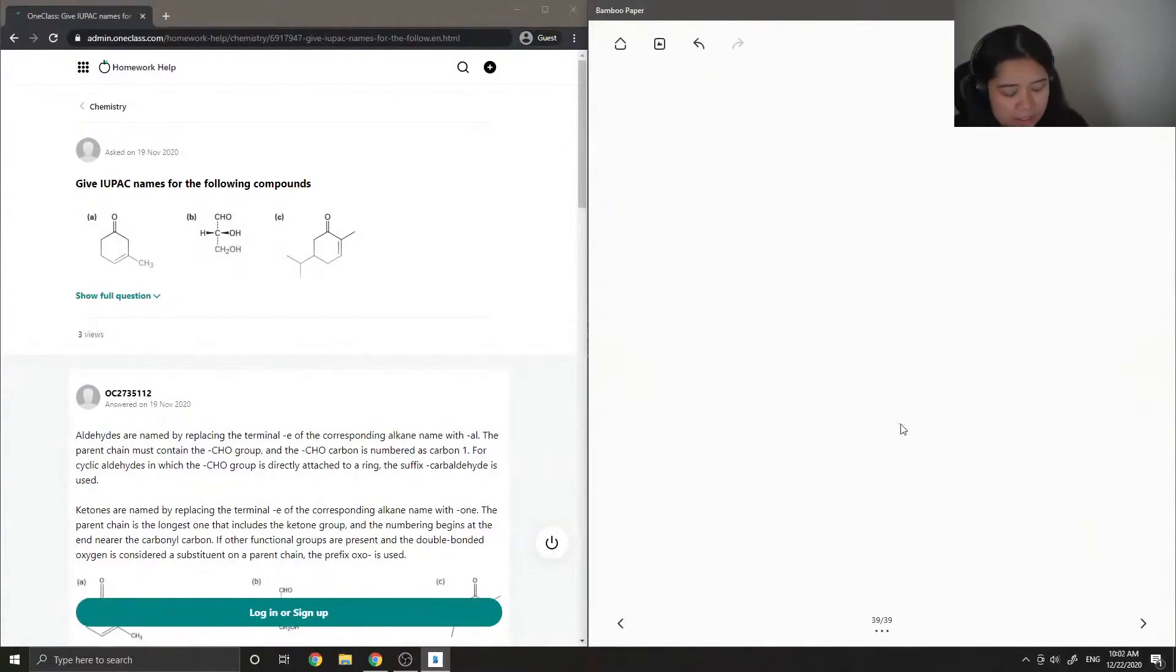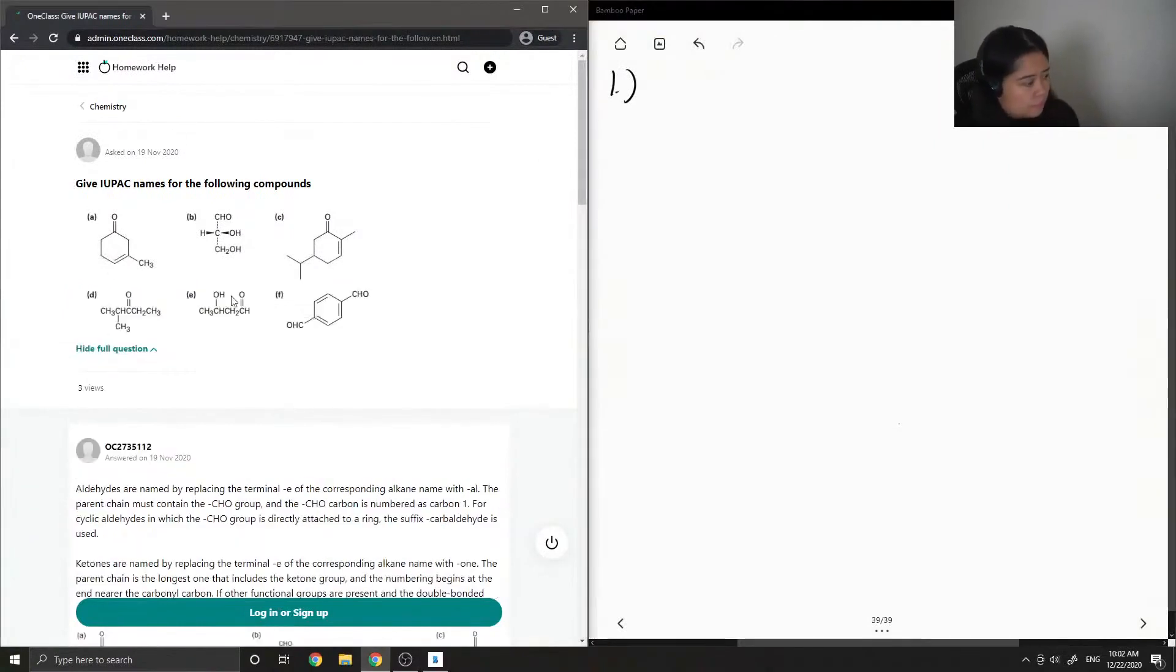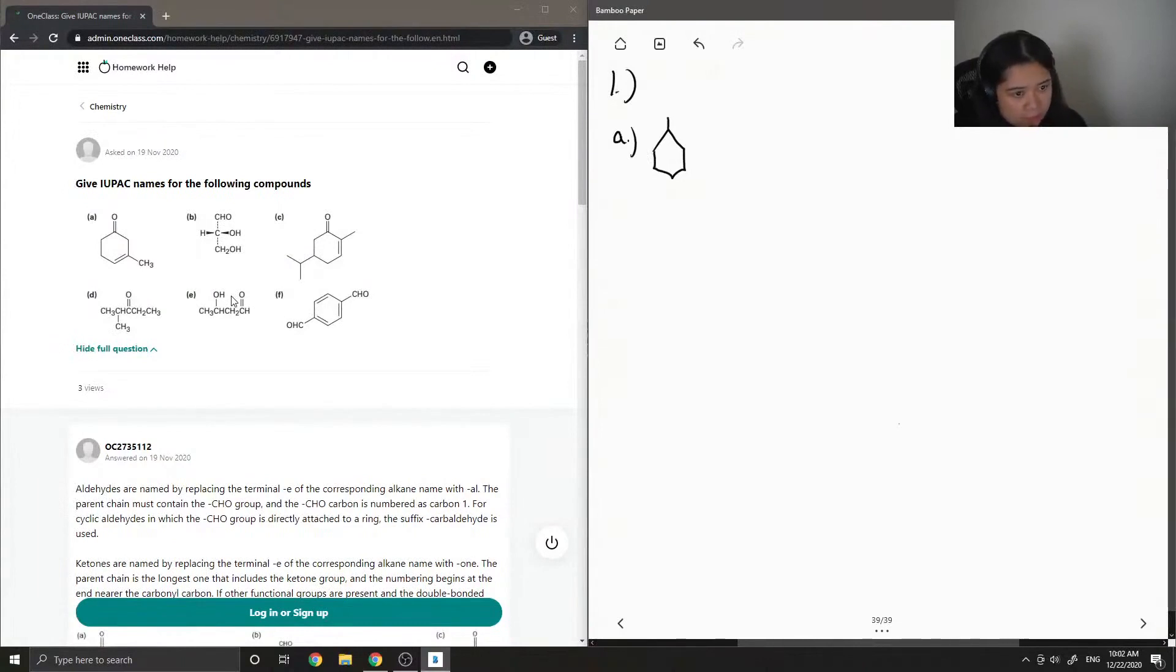Question one asks to give the IUPAC names for the following compounds. Let's draw out all of the structures first. Maybe I'll just do the first three so we can get the hang of it. The first compound has a six-membered ring, the carboxyl group, a double bond, and also a methyl group sticking out as well.